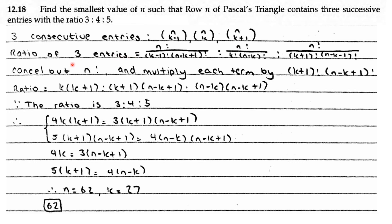The ratio of the 3 entries is n factorial over (k minus 1) factorial times (n minus k plus 1) factorial, and so on. Canceling and multiplying each term by (k plus 1) factorial times (n minus k plus 1) factorial, the ratio becomes k(k+1) to (k+1)(n-k+1) to (n-k)(n-k+1). Since the ratio must be 3 to 4 to 5, we set up: 4k(k+1) = 3(k+1)(n-k+1) and 5(k+1)(n-k+1) = 4(n-k)(n-k+1). We then solve these equations.